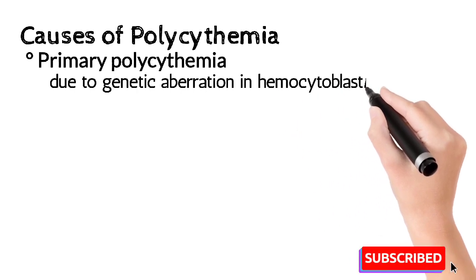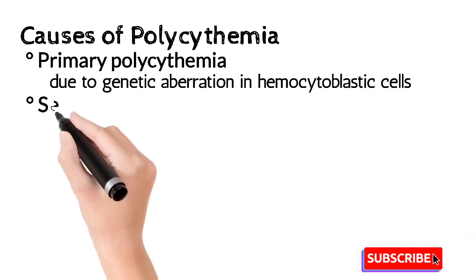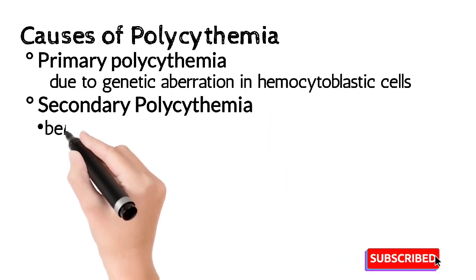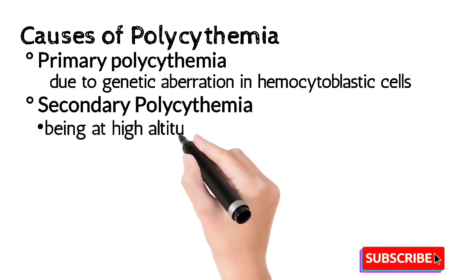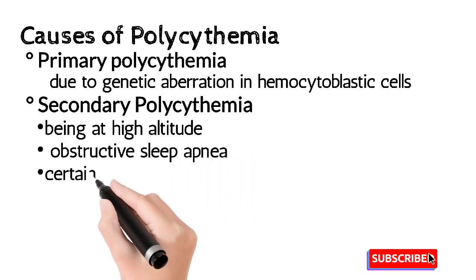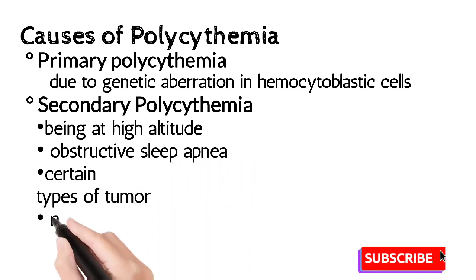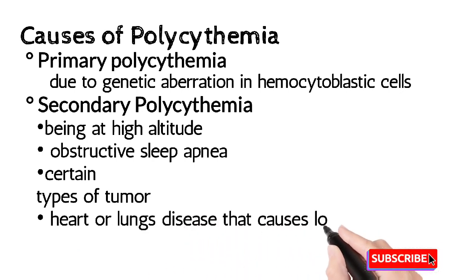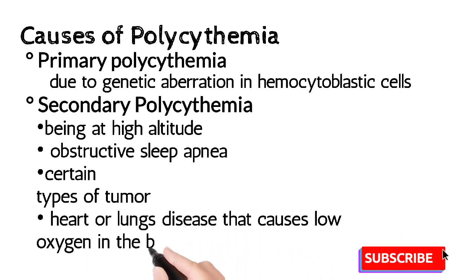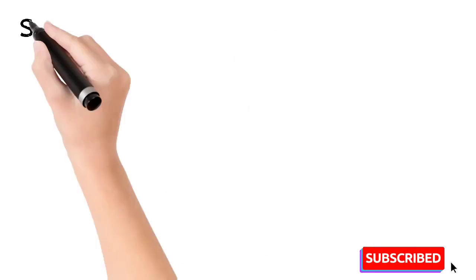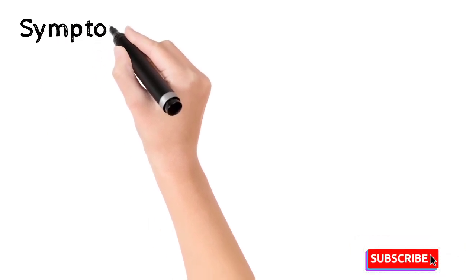Regarding the causes of polycythemia: primary polycythemia occurs due to genetic aberration in the hemocytoblastic cells. Secondary polycythemia is a physiological condition that occurs at high altitudes, obstructive sleep apnea, certain types of tumors, or heart and lung diseases that cause low oxygen concentration in the body, prompting the body to produce more RBCs as compensation.